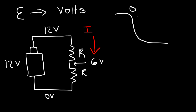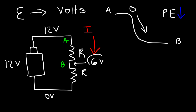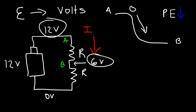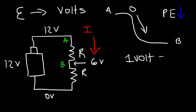You can liken this to a ball rolling down from a high position to a low position. As the ball rolls from A to B, its gravitational potential energy decreases. Similarly, as current flows from A to B, the electric potential energy of the current decreases. The potential at position A is 12 and at B is 6, so the voltage across the resistor is 6 volts — the difference between these two values.